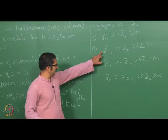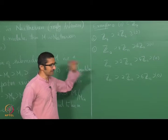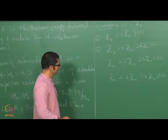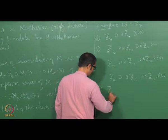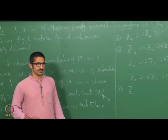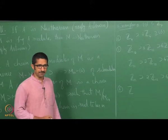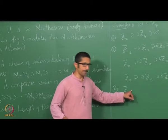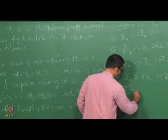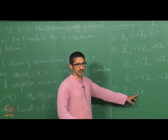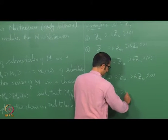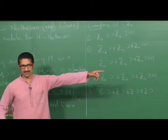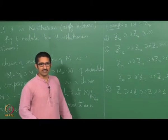All composition series of Z_12 have length 3. What about Z as a Z-module — does it have a composition series? If I try to construct one, I start with 2Z, then 4Z, then 8Z, and so on; it never terminates. So Z does not have a composition series.